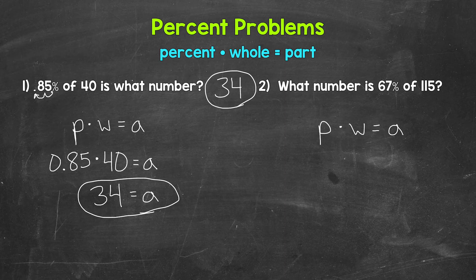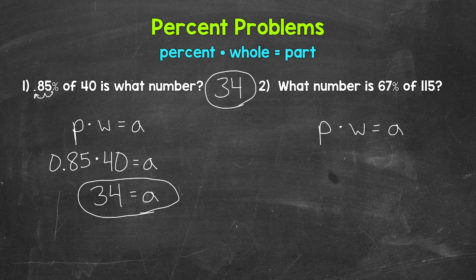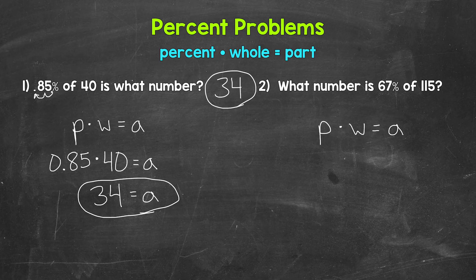Now we can plug in. And remember, we can look for the percent of a whole amount and use the keywords of and is. We have what number is 67% of 115. So our percent is 67%. And then we are finding the percent of the whole amount, 115. So let's plug those in.